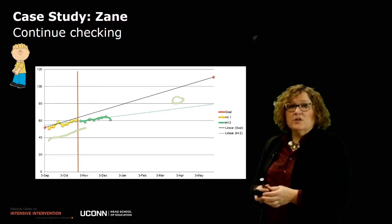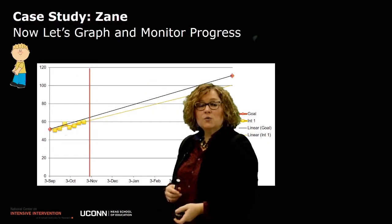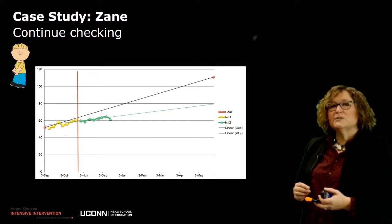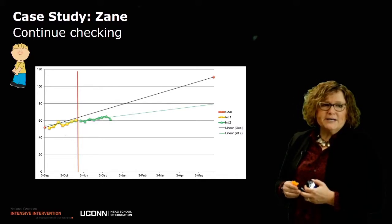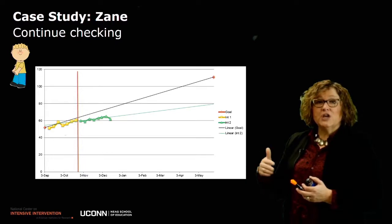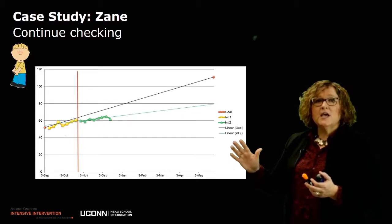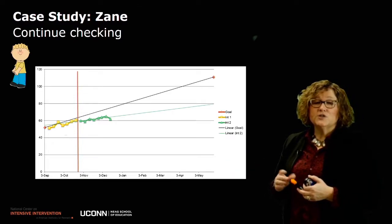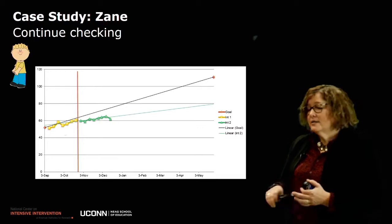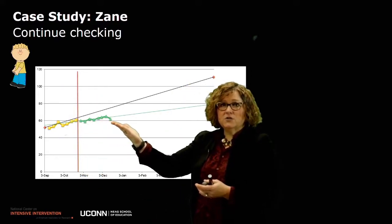In the first example, looking at Zane's initial data, the trend line was actually below the goal line. He's making progress, but not increasing at the rate we would hope. So Ms. Smith decides to remove some of the word attack and word list reading practice, and make a change by adding more sentence and passage level reading practice. She's trying to pick evidence-based interventions while making changes in Zane's instruction. She draws a red line to indicate a change in intervention and then continues to collect weekly data.